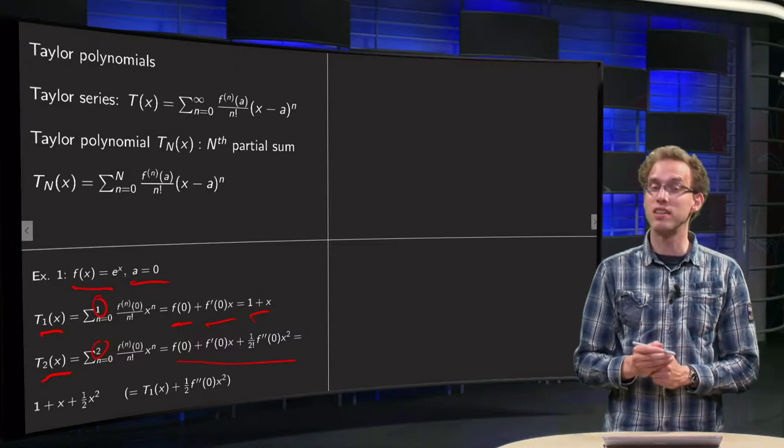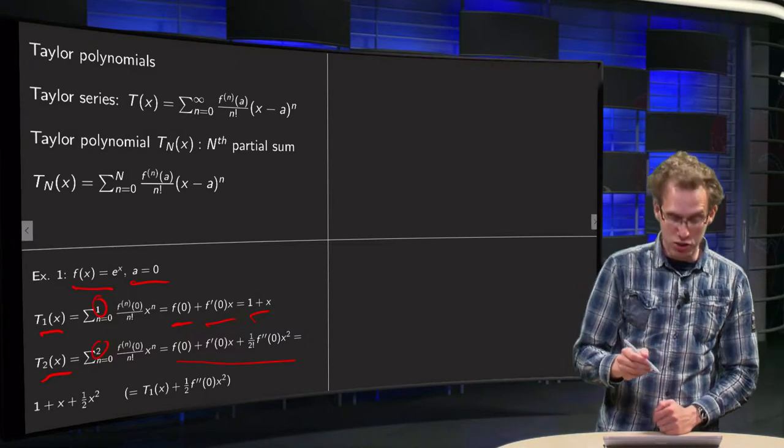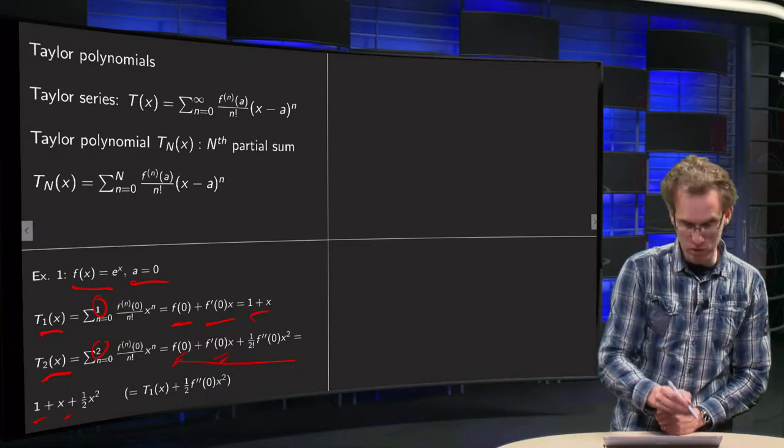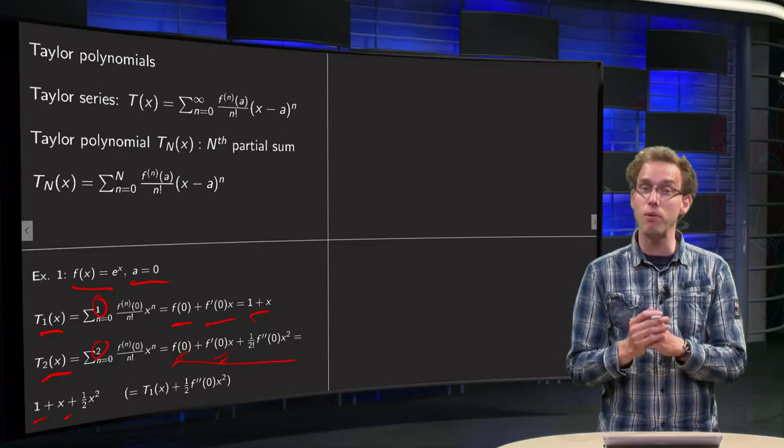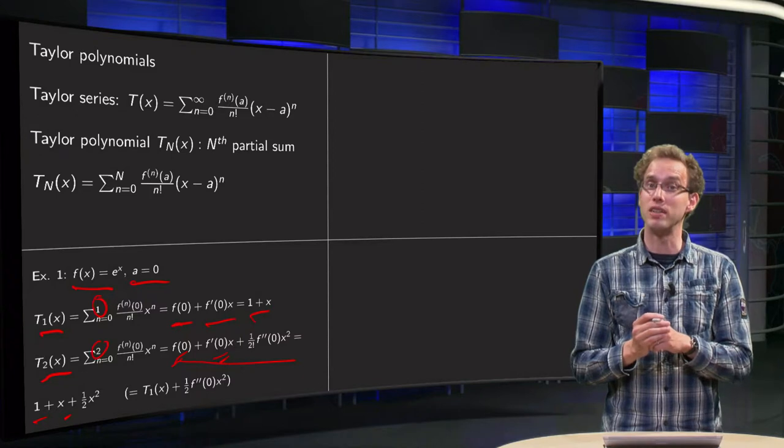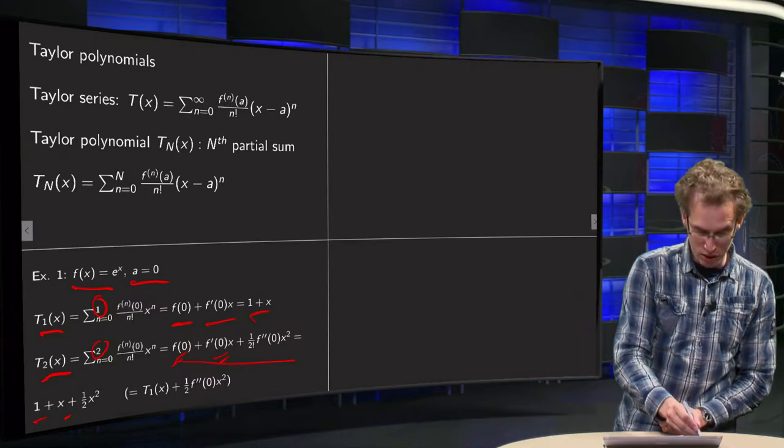So this is our second Taylor polynomial, and you see we computed already this term and that term, so our one plus x we have already, so only need to compute the next one. f'' is again e to the power x, plug in zero, we get one, so we get one half times x squared.